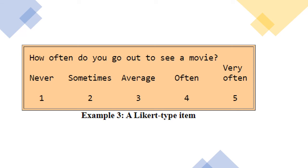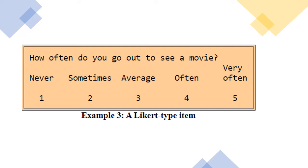Three things we have discussed: Likert scale, Likert item, and Likert type item — all three are different. A Likert type item asks questions like, 'How often do you go out to see a movie?' with responses: never, sometimes, average, often, very often. This is a common error — this format is not a Likert scale or Likert item. It is not suitable for parametric tests and this error should be avoided.